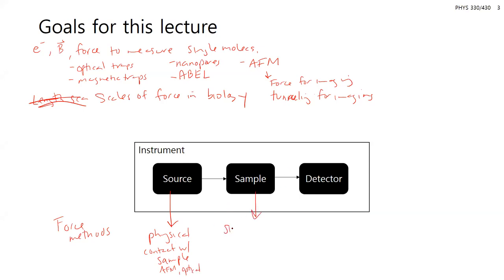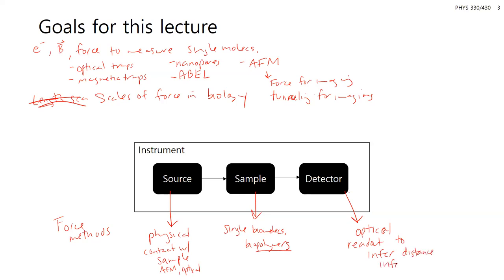The sample is going to be single biomolecules or biopolymers. Biopolymers are desirable because of their lengths, which are conducive for these types of instrumentation. The detector still involves optics and light — an optical readout to infer distance information. There's still some optics involved, but not for the source or the sample, just as the detector to infer that distance.